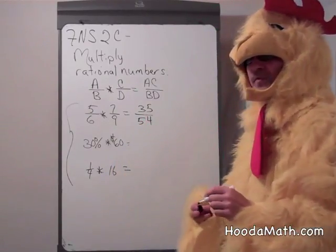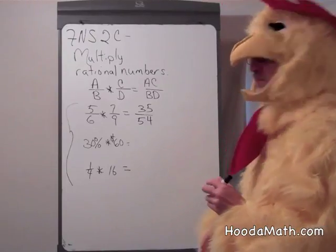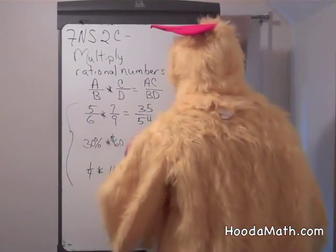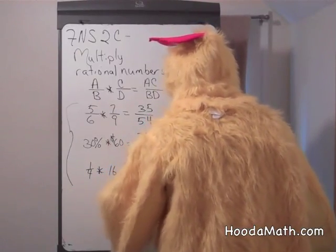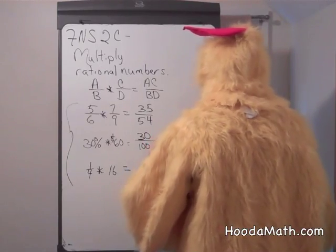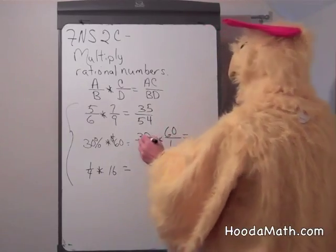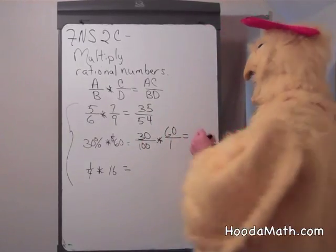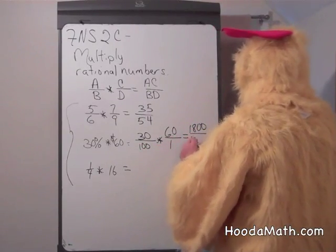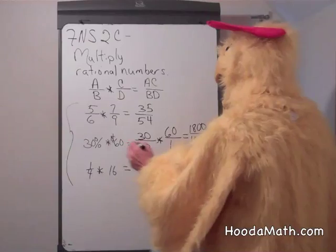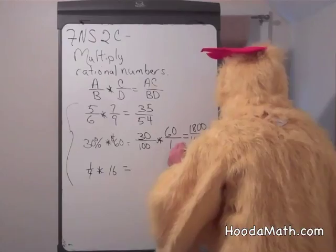Sometimes we have to convert our numbers into fractions before we multiply. Thirty percent of sixty dollars means thirty out of a hundred or thirty hundredths times sixty over one. If we multiply, we get one thousand eight hundred divided by one hundred. Thirty percent of sixty dollars would be eighteen dollars.